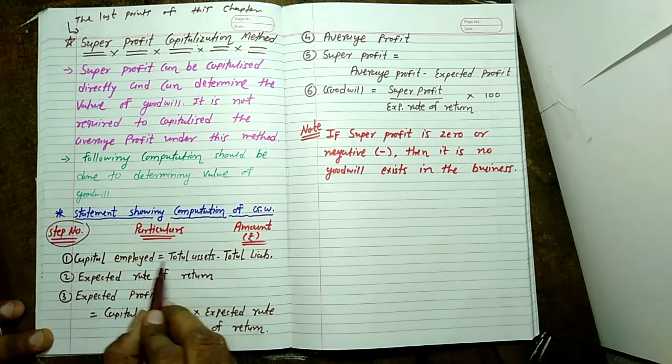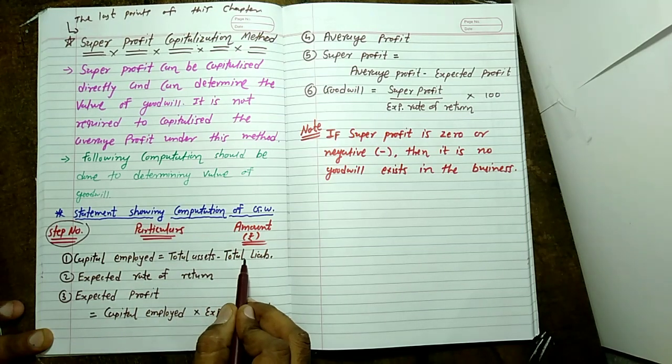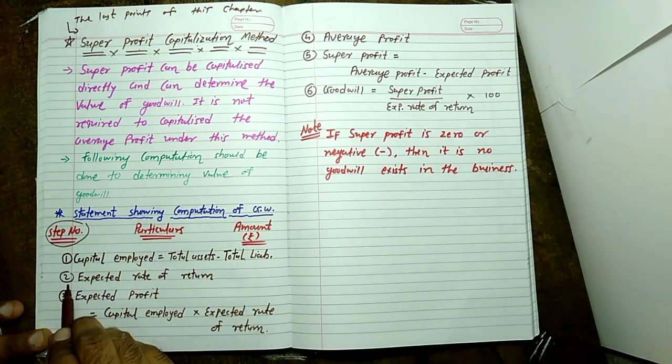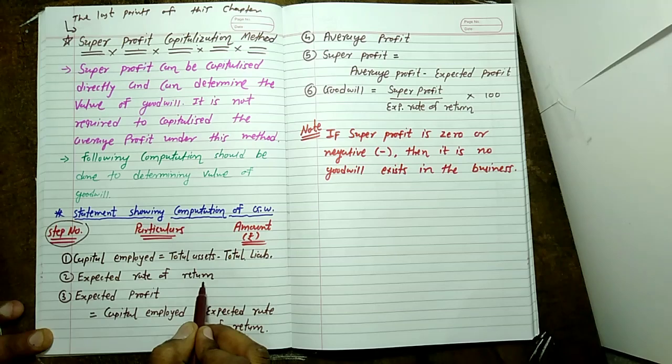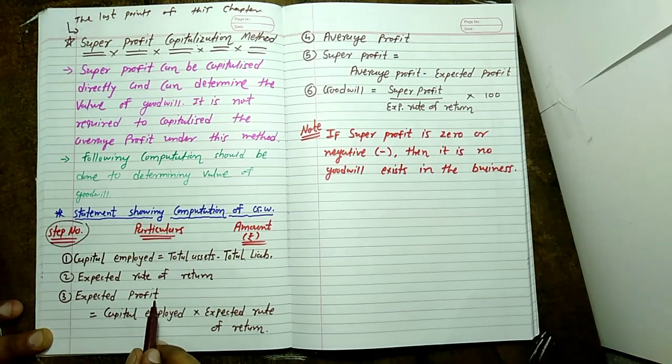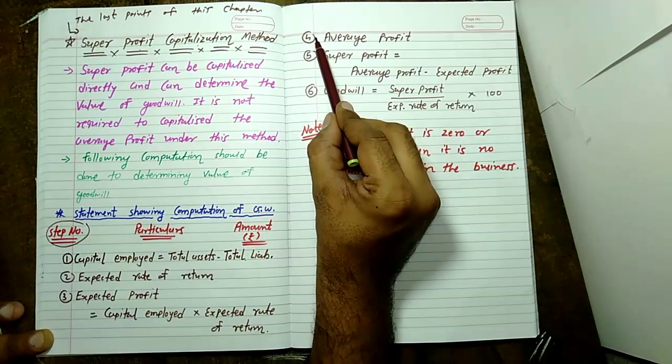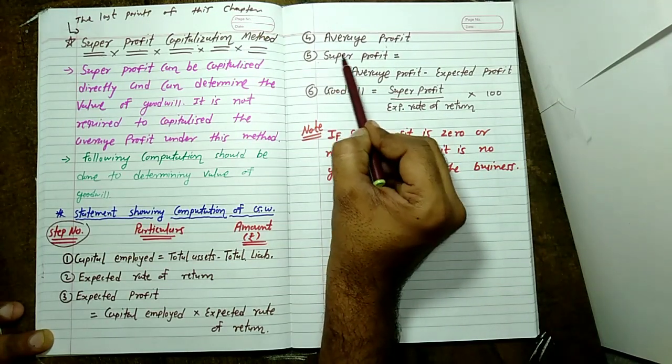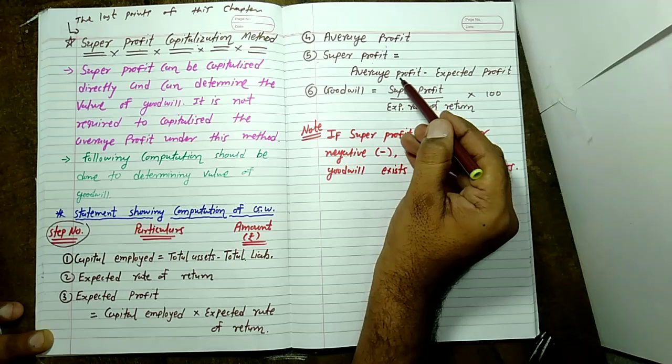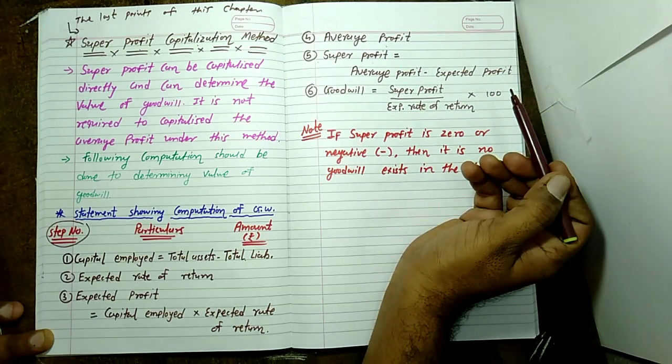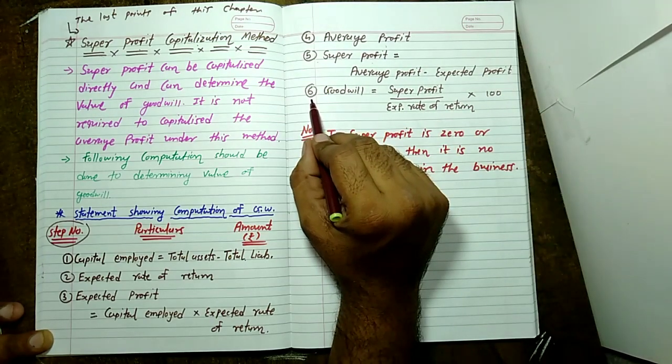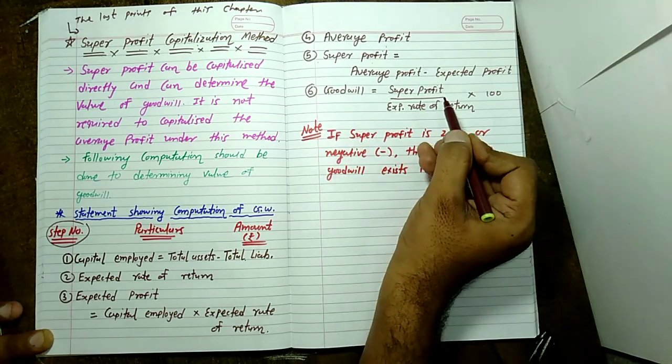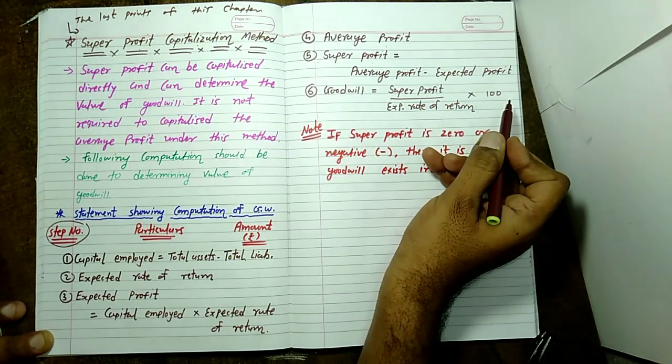Point number one: capital employed means total assets minus total liability. Point number two: expected rate of return. Point number three: expected profit means capital employed into expected rate of return. Step number five: super profit means average profit minus expected profit. And step number six: goodwill means super profit upon expected rate of return into hundred.